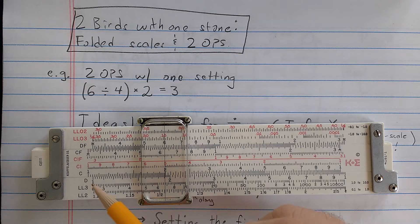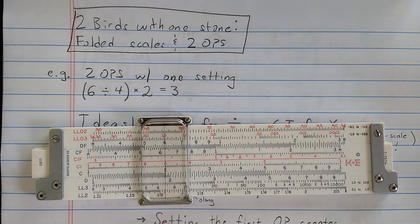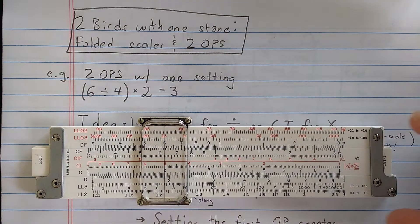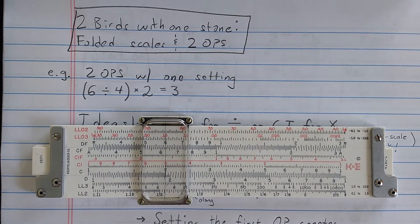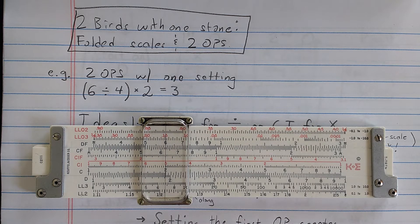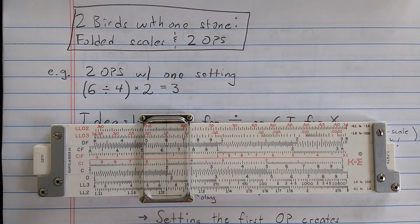So your slide rule should have C, D, and CI, but also CF, DF, and CIF. As a disclaimer, I'm not an expert at this. There may be other ways to do this. I really just thought about this this morning and came up with a kind of strategy. Perhaps more experienced slide rulers can chime in on the comments with their techniques.